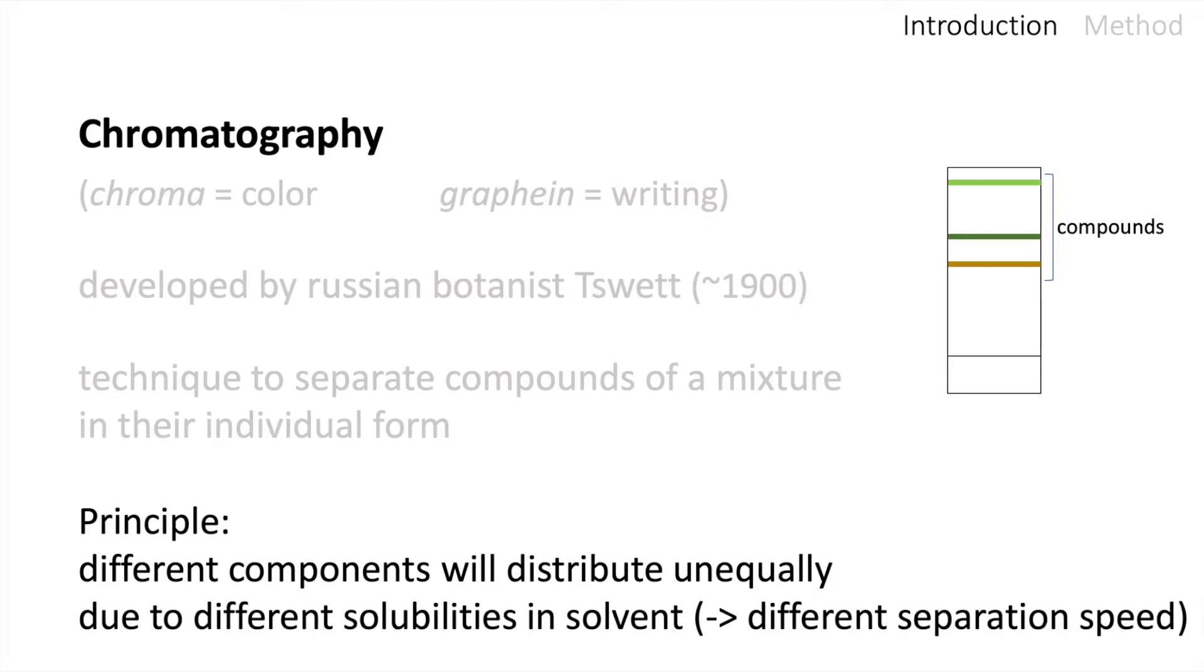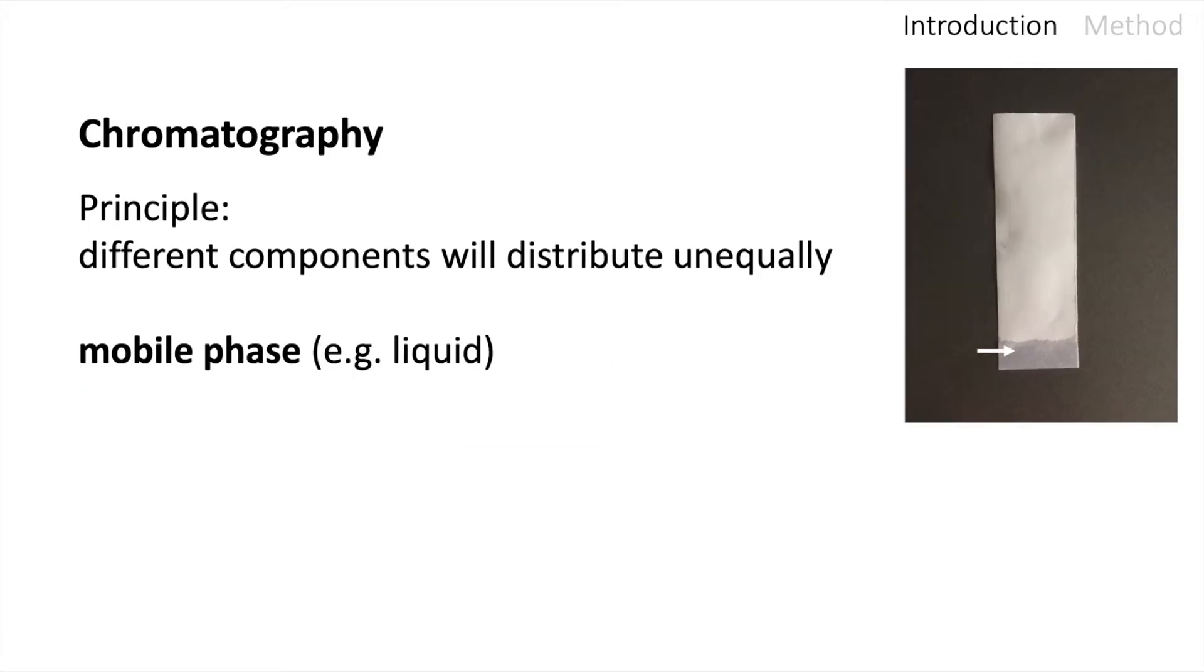Let's keep in mind, different compounds will distribute unequally. Here we see the mobile phase, it's for example a liquid. The stationary phase can be solid.